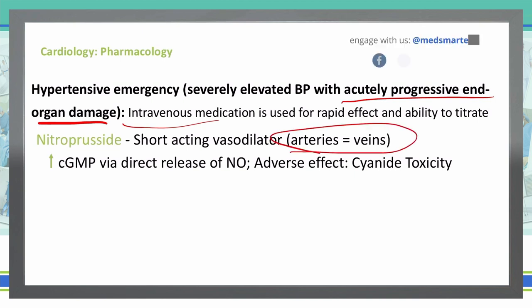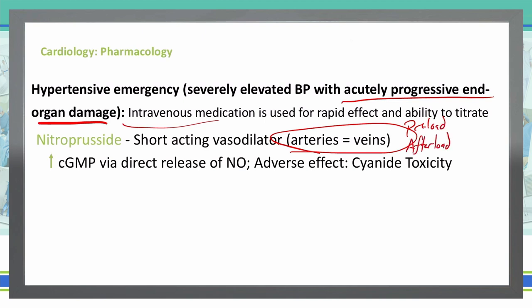Nitroprusside is a short-acting vasodilator that works both on the arteries and the veins, meaning we're going to affect both the preload and the afterload. It works by increasing cyclic GMP via a direct release of nitric oxide. Adversely, we can see cyanide toxicity with nitroprusside, so we need to keep an eye out for that.